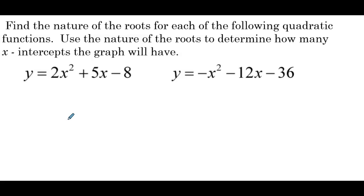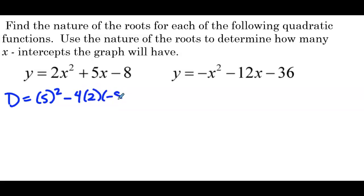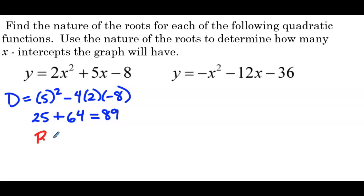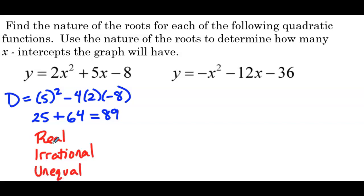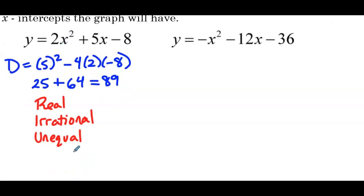Last example: find the nature of the roots for each quadratic function and determine how many x-intercepts the graph will have. First, find the discriminant: 5² − 4(2)(−8) = 25 + 64 = 89. That's not a perfect square. The discriminant is greater than 0 and not a perfect square, so the roots are real, irrational, and unequal. Since they're unequal, there will be 2 x-intercepts.